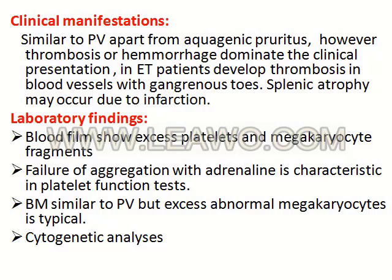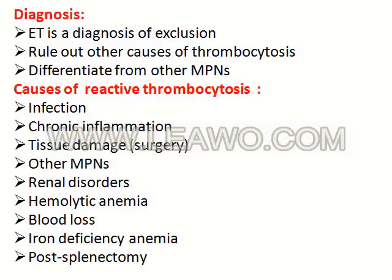Laboratory findings: the blood film shows excess platelets with failure of aggregation. Bone marrow is similar to polycythemia vera but with excess abnormal megakaryocytes. The disease is cytogenetically normal.